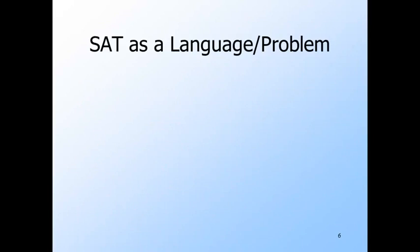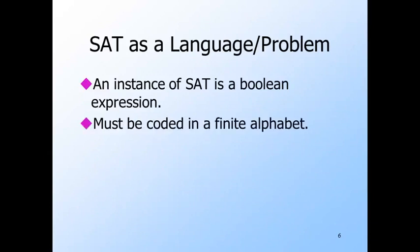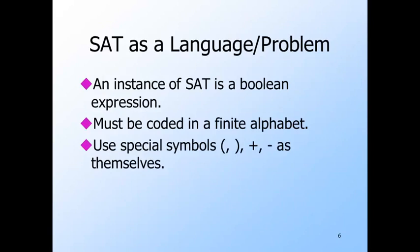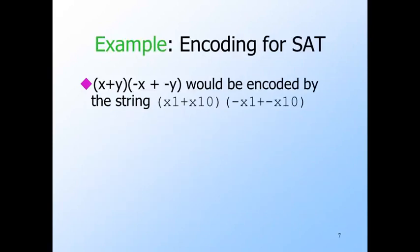We must see the SAT problem as a language, just like all the other problems we've discussed. The instances of the SAT problem are all the Boolean expressions. Since expressions can have any number of variables, we must code expressions in a finite alphabet. The parentheses, the plus and minus, can represent themselves. But we need a scheme for representing variables. We'll represent the i-th variable by the symbol x followed by i in binary. What we call the variables doesn't matter as far as satisfiability is concerned.